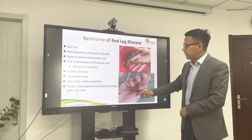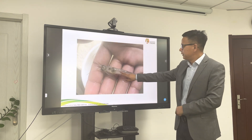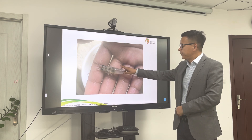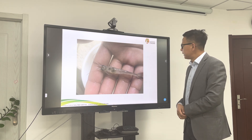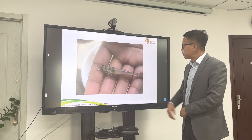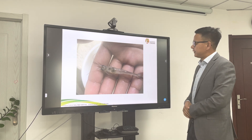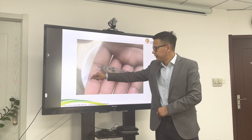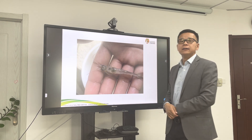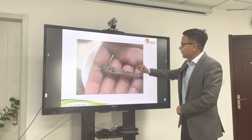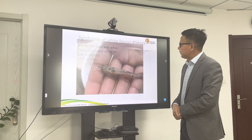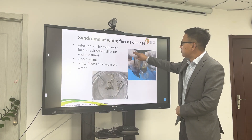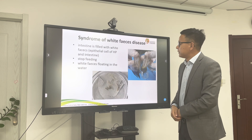Finally, the hepatopancreas will look very cloudy and become pale, and the whole intestine is empty. The antenna will also be broken. That is the red leg disease.